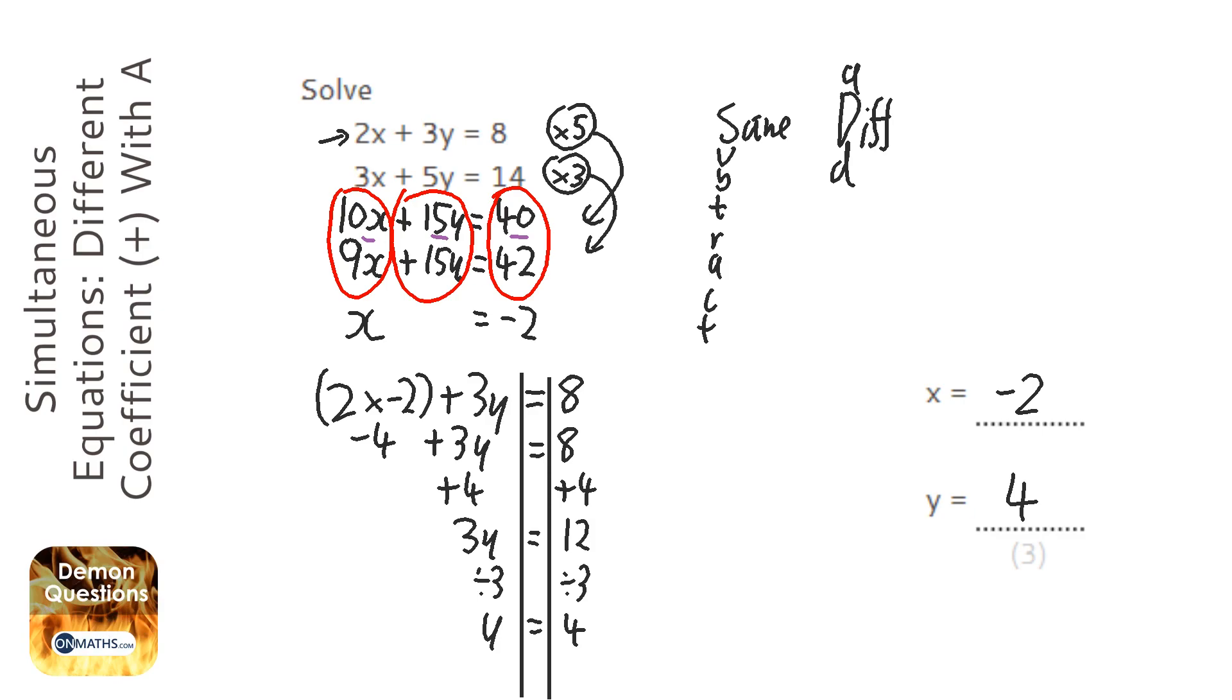OK, we can check that by putting it into the second equation, so we've got minus 6 plus 20 is 14, which it is, so we know it's correct.